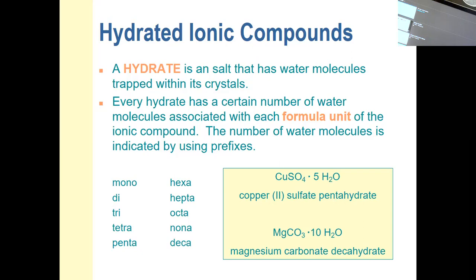A hydrated ionic compound, sometimes just called a hydrate, is a salt that has water molecules trapped somewhere within its crystal structure. So ionic compounds in general are called salts. Salt that we're most familiar with is table salt, sodium chloride, but any ionic compound could be referred to as a salt.